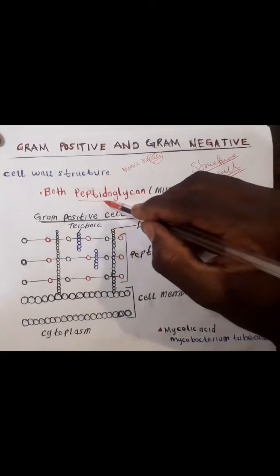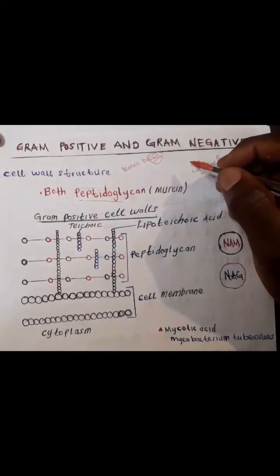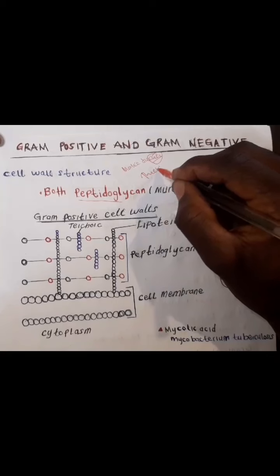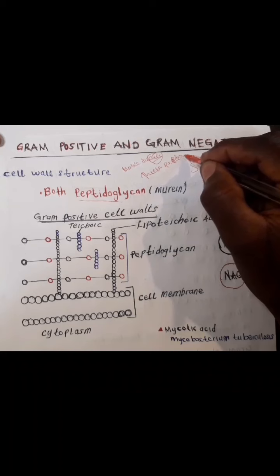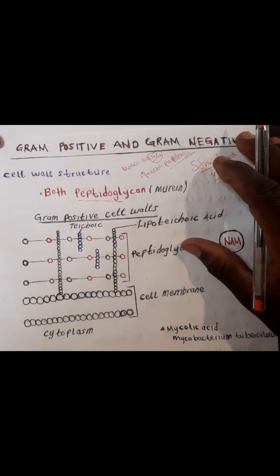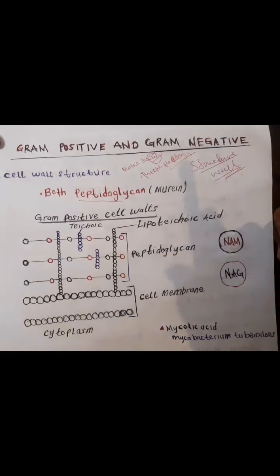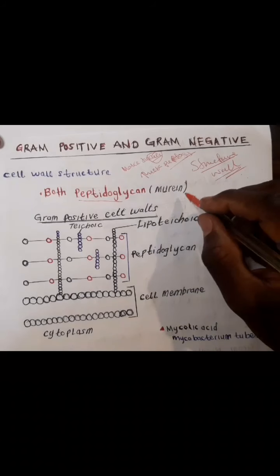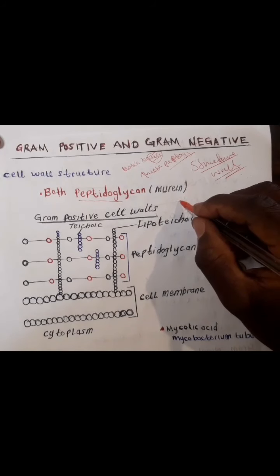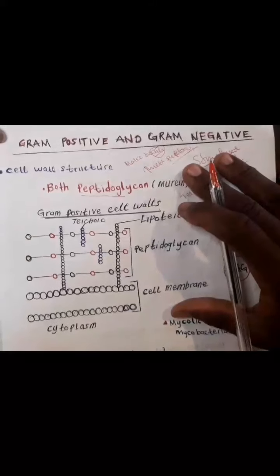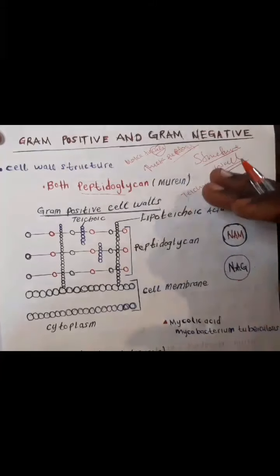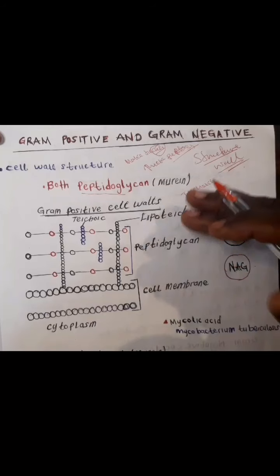The gram-positive bacterium has a thick peptidoglycan layer. Not only does it have the thick peptidoglycan, but it also has additional molecules known as teichoic acid, just as we can see from this diagram demonstrating the gram-positive cell wall. Another name for peptidoglycan is murein.